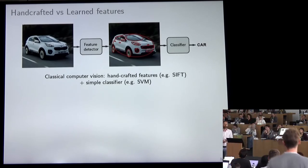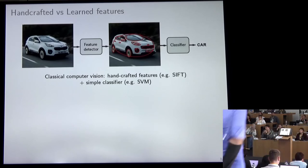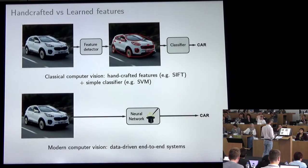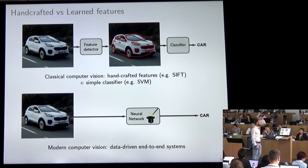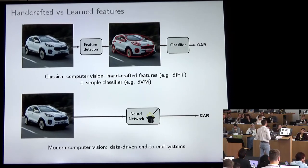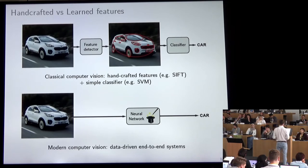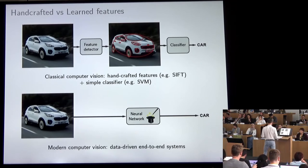After extracting features, you would apply some standard classifier such as a support vector machine — for example, to tell that this is a car. With deep learning, you try to solve these tasks and extract features that are optimal for the specific task. If you want to tell apart different car makes, you will need maybe something else. This ability to learn task-specific features was one of the important success points of deep learning.